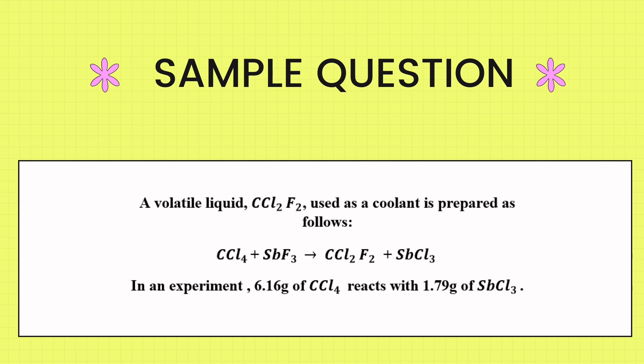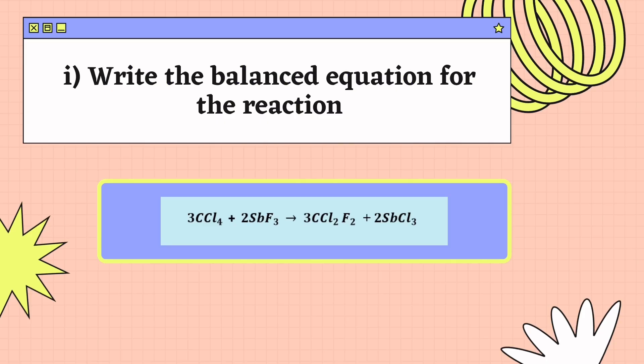6.16 grams of CCl4 reacts with 1.79 grams of SbF3. For the first question, write the balanced equation for the reaction, where the answer is 3 CCl4 plus 2 SbF3 produces 3 CCl2F2 plus 2 SbCl3.